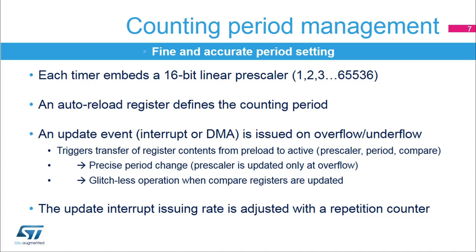This update event triggers the transfer from preload to active registers for multiple parameters, in particular for the clock pre-scaler, auto-reload value, compare registers, and PWM mode. An 8-bit programmable repetition counter allows you to decouple the interrupt issuing rate from the counting period, and have, for instance, one interrupt every single, second, third, and up to 256th PWM periods. This is particularly useful when dealing with high PWM frequencies.